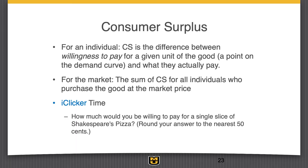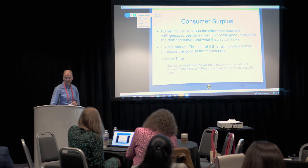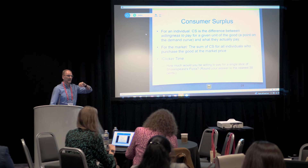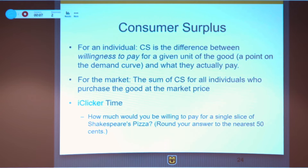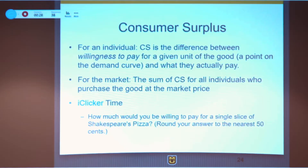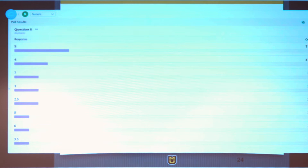This is a numeric question. I ask them to round to the nearest 50 cents so we can get groupings in the data as opposed to having answers all over the place. I want to run this to show what the data looks like. Most people have answered now. We can sort by most popular — five dollars is the top answer, then four dollars, seven dollars, three dollars.